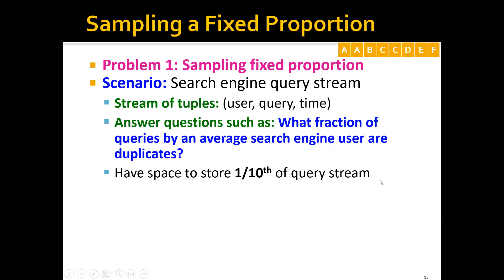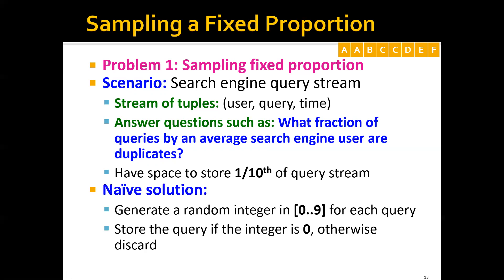Now let's say that we only have space to store one-tenth of the queries. How can we sample this data? The naive solution will be just to generate a random integer from zero to nine for every query, and you only store the query if the integer is zero.